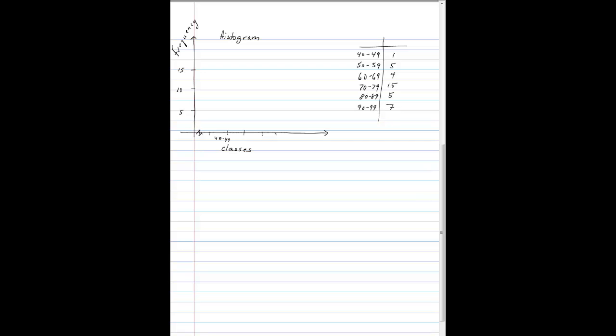This is 40 to 49, 50, 60, 70, 80, and 90. Let's make that a little bit more evenly spaced. This is really 50 to 59, 60 to 69, 70 to 79, 80 to 89, and this last one is 90 to 99.